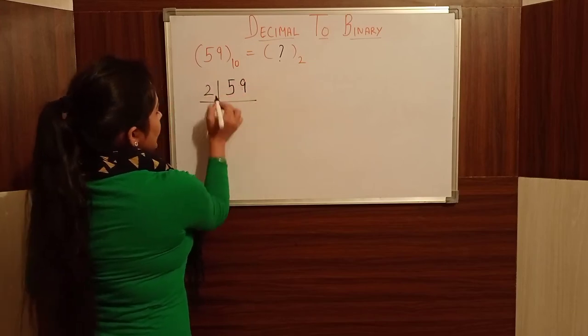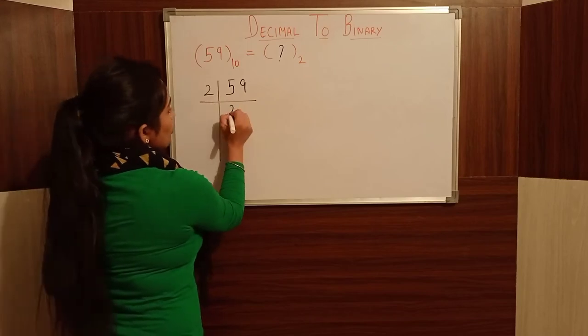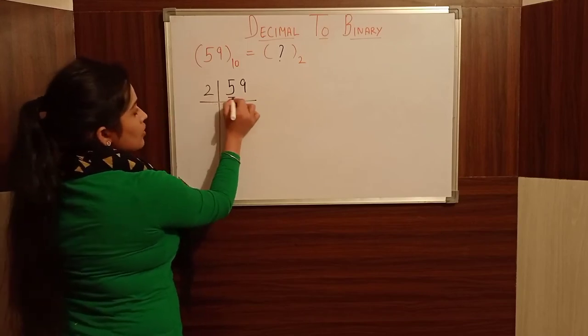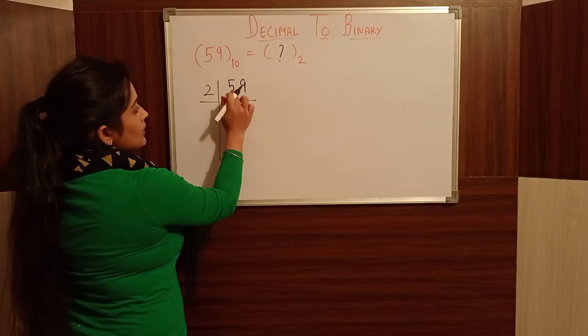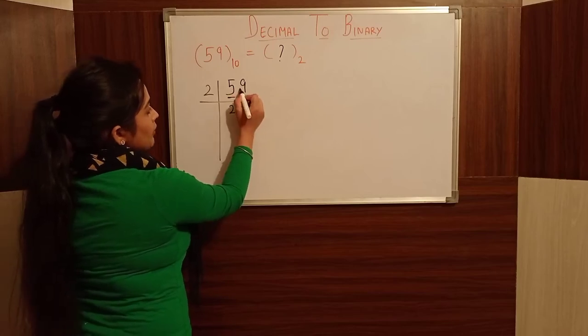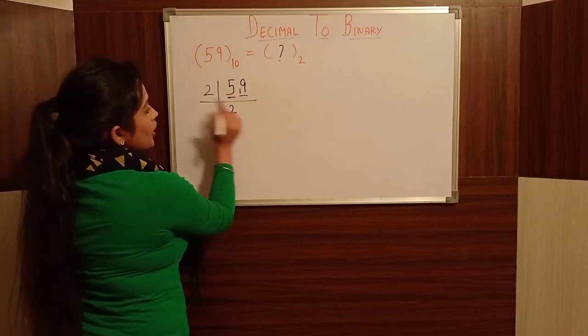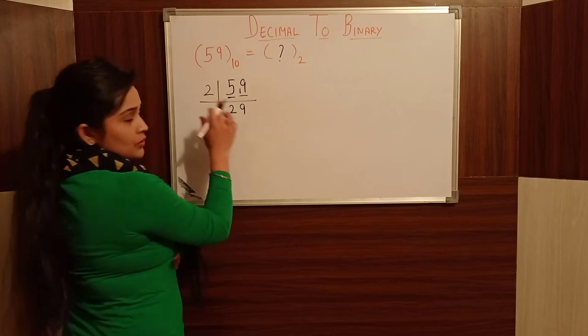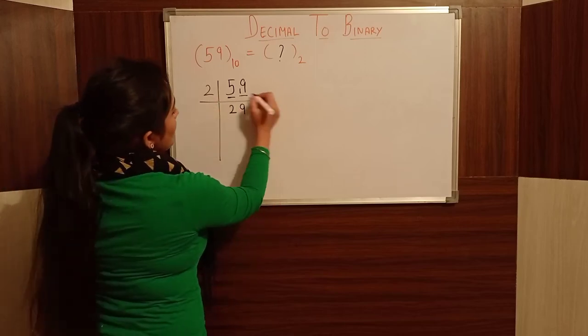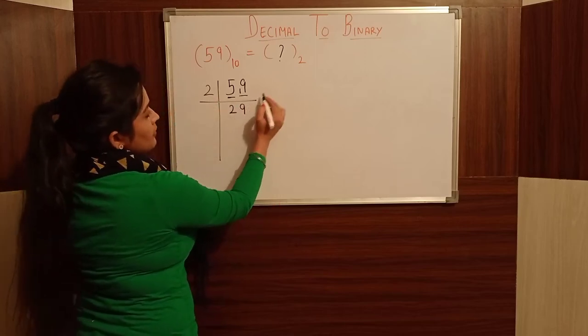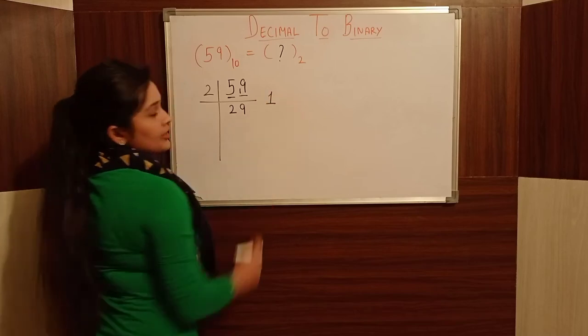2 is the divisor. What do we do? We divide. 59 divided by 2. We continue dividing and getting remainders. We drop 1 to carry and continue the division process.